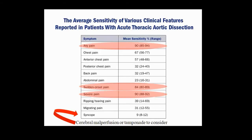Looking at the most common features: pain is the most common symptom — chest pain or back pain depending on location. Severe pain and sudden onset are really the typical features of aortic dissection. Some people have syncope — it literally brings them to their knees.